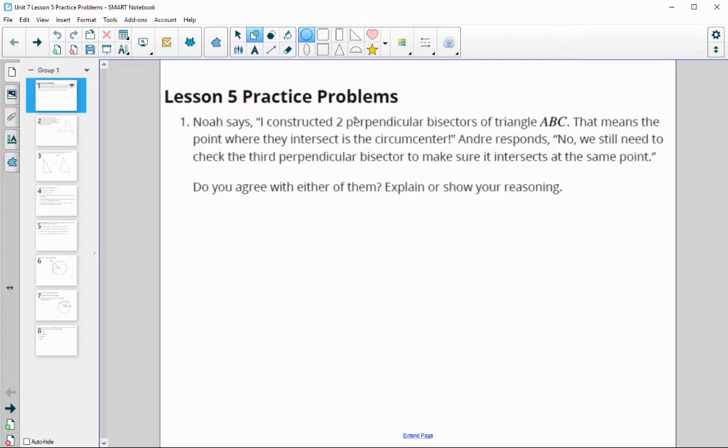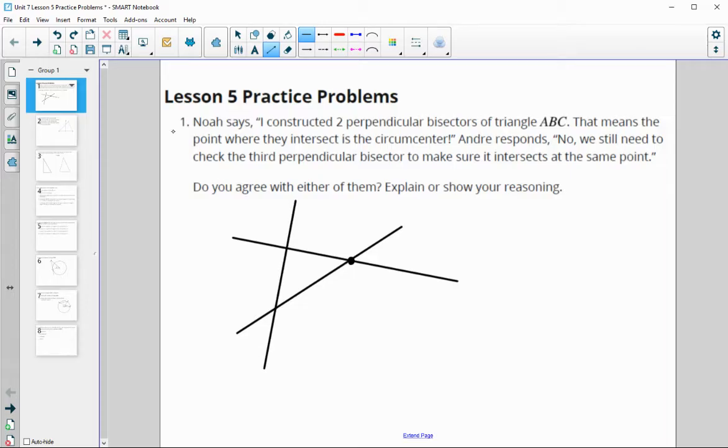Certainly the circumcenter is where all three perpendicular bisectors cross. But you don't have to find all three because when lines cross, there's only one way for them to cross. There's only one point. So if you've drawn two of them, you know this is the point where the third one has to go through in order for them all to cross at the same point. The third one is just making sure that the other two were done correctly.